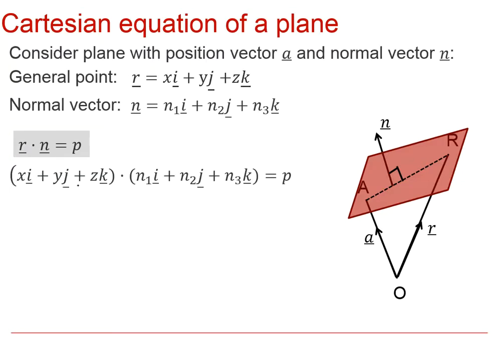Now if we look at this, r is a general point on the plane and n is the normal vector. If we actually carry out this dot product we can see that we get xn₁ plus yn₂ plus zn₃ equals p, and this is another way that we can write the equation of a plane in Cartesian form.